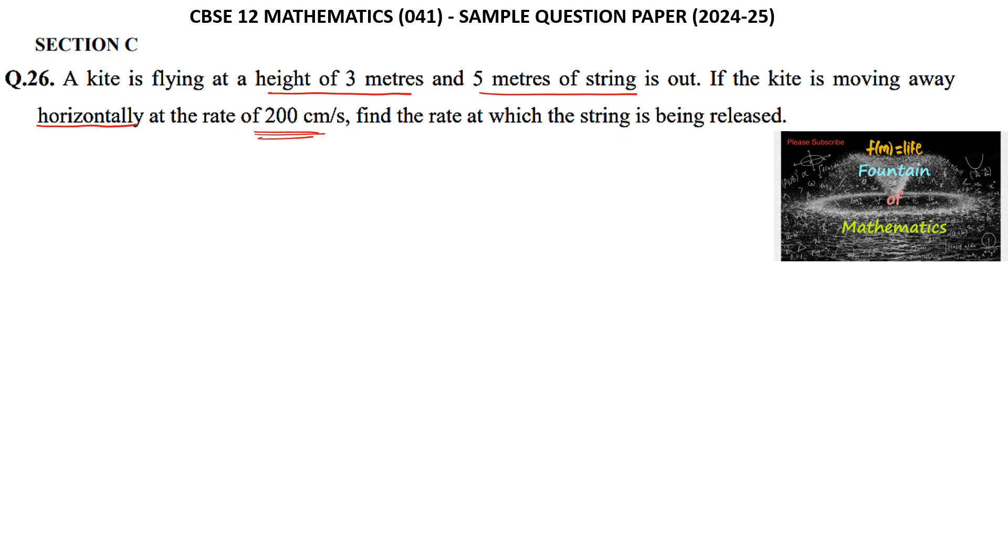Let's draw the diagram. Let H be the height of the kite. This is the ground level, and this is where the string is released. Say this is X (the string length), and this is Y (the horizontal distance from the ground point).